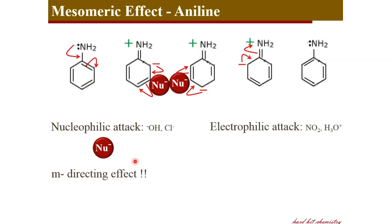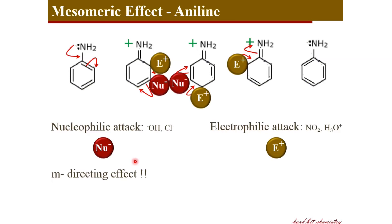On the other hand, if it is an electrophilic reagent approaching the aniline molecule, the electrophile — the positively charged species — looks for negatively charged centers. Ortho and para positions are the negatively charged centers, so the electrophile attaches at the ortho and para positions. Therefore, aniline or the NH2 group has an ortho and para directing effect for electrophilic attack. That is about the mesomeric effect and the important consequence of mesomeric effect due to the presence of a nitro group or amino group on aromatic structures — they influence the positioning of new electrophilic or nucleophilic reagents with respect to the substituent position.